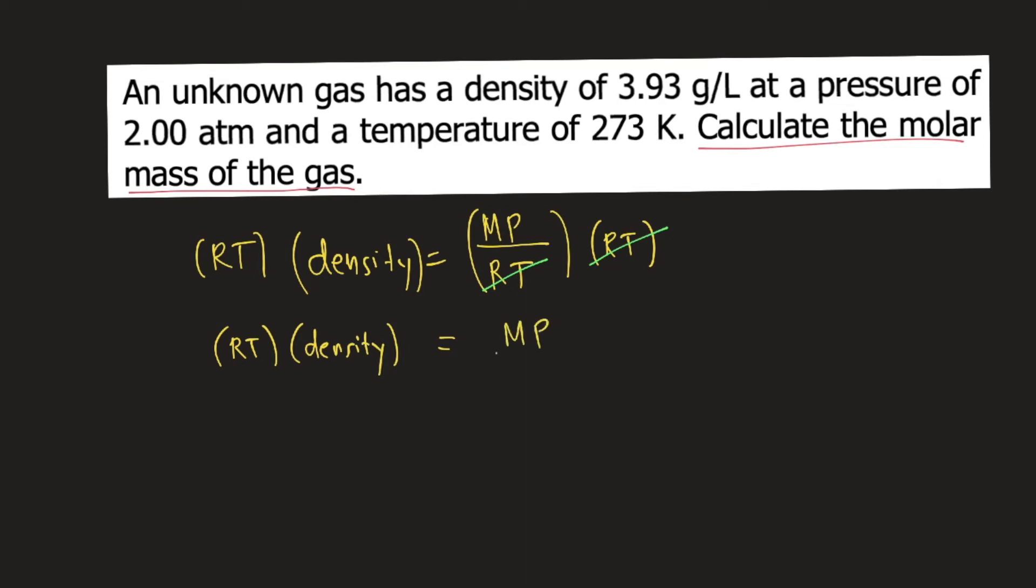Then divide both sides by P. So P would cancel on the right side, so your formula becomes molar mass is equal to RT times density divided by P.